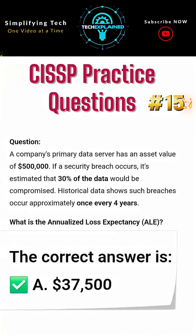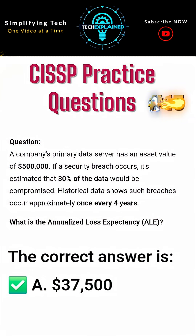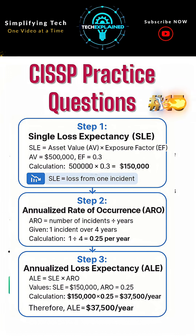The correct answer is A — $37,500. To calculate ALE, use the following formula. Step 1: Calculate Single Loss Expectancy (SLE).